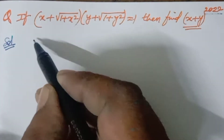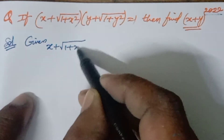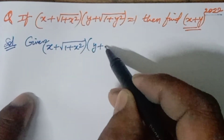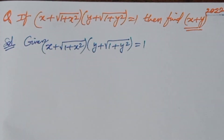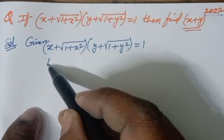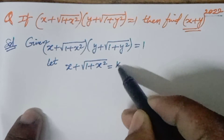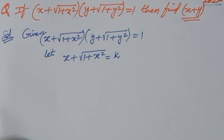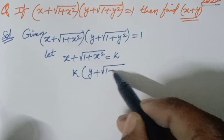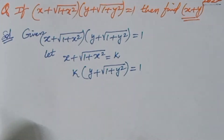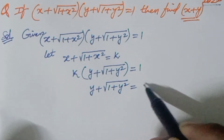Now we will go to the solution. What is given: (x + √(1 + x²)) × (y + √(1 + y²)) = 1. You have to find the relation between x and y. Let us take the first bracket: x + √(1 + x²) = K. Then K × (y + √(1 + y²)) = 1, which means y + √(1 + y²) = 1/K.